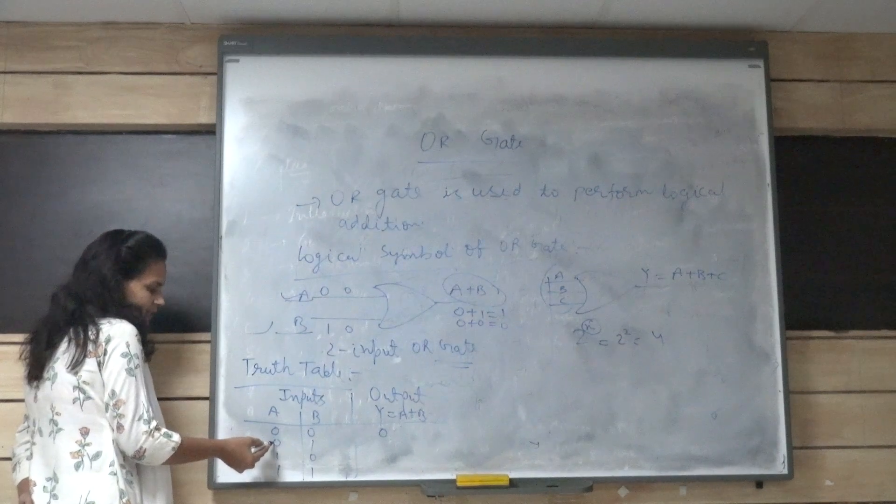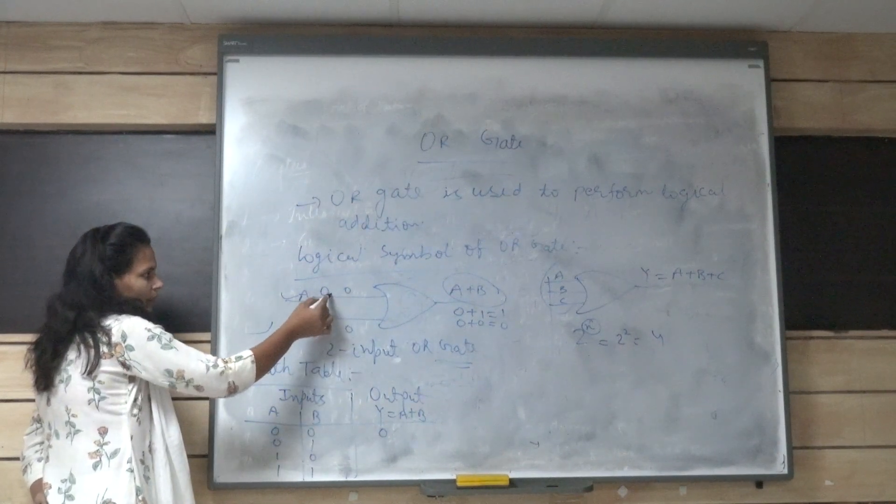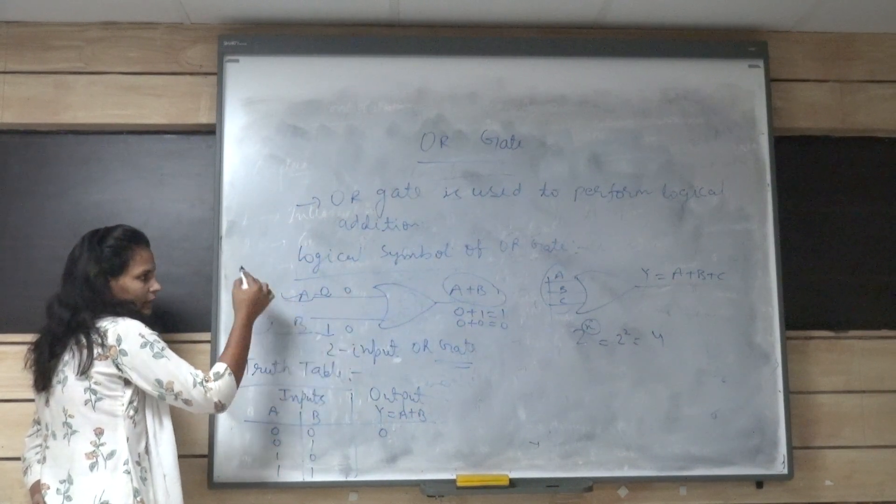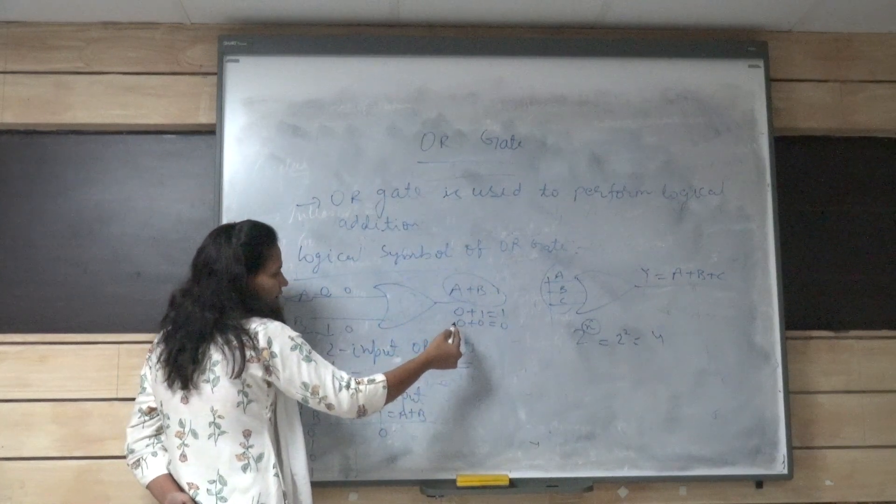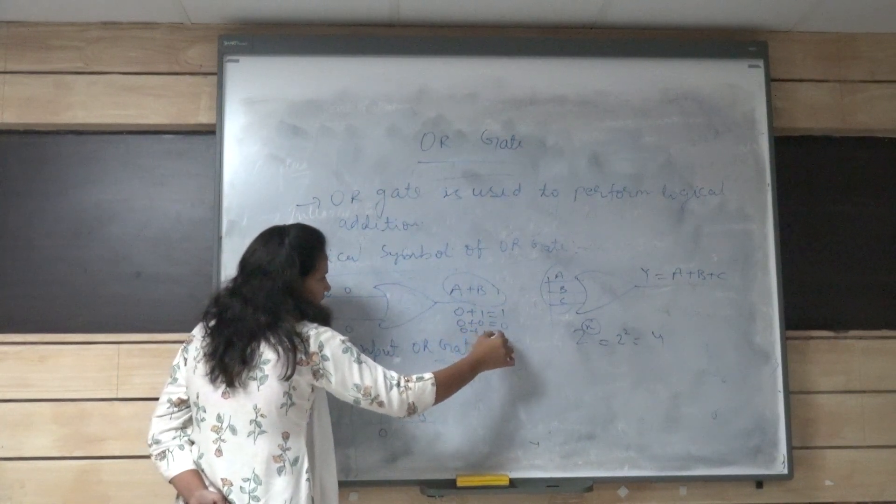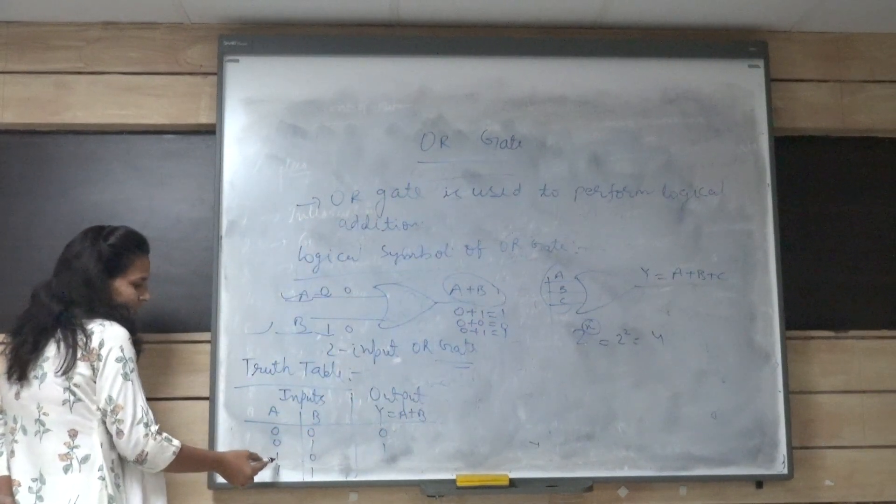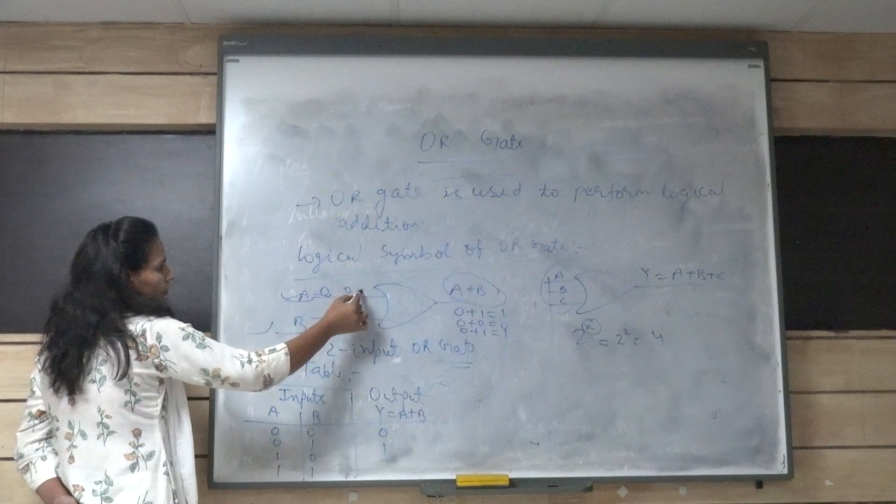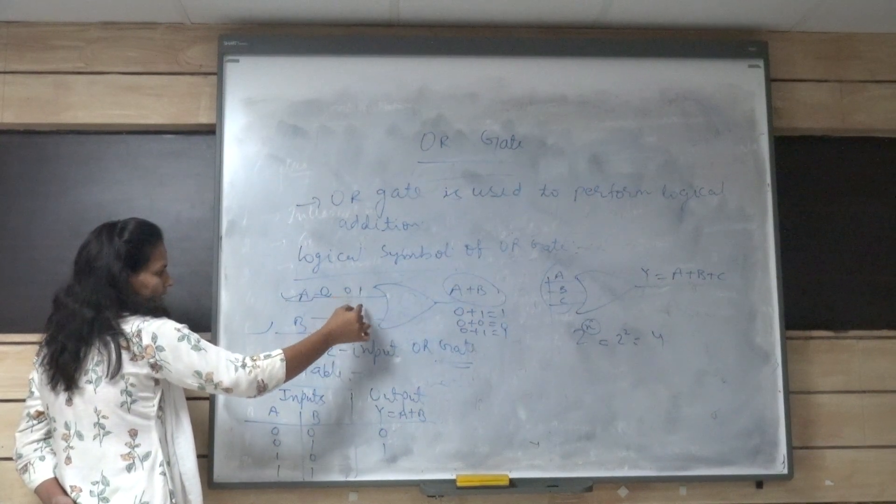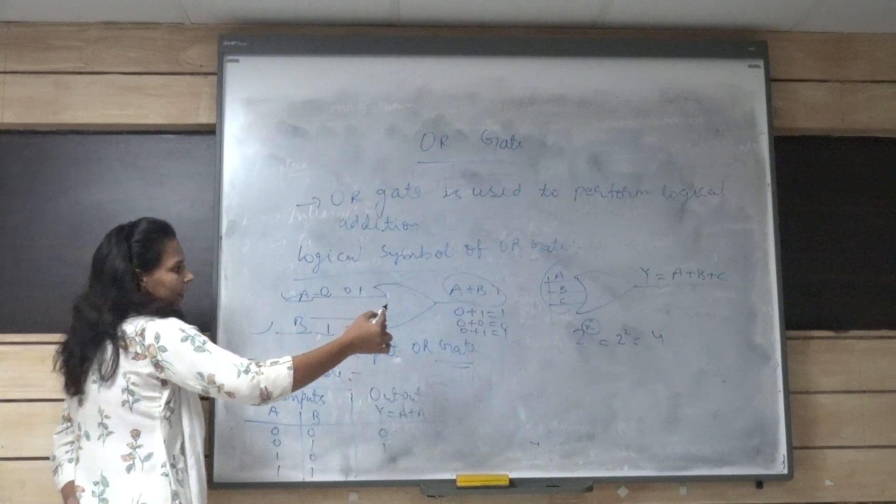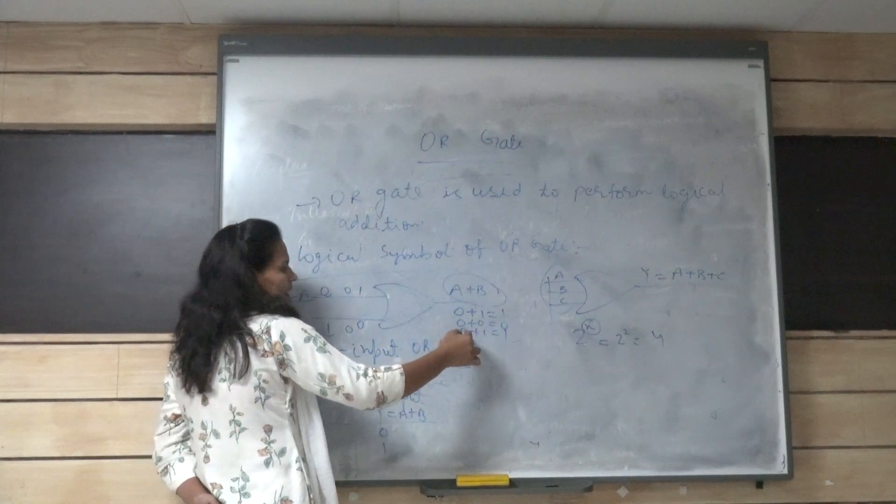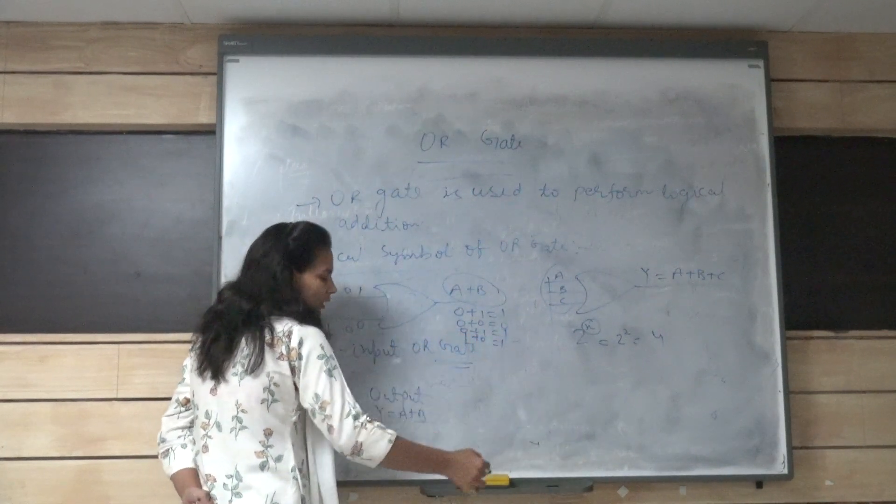In the next case, when A is 0 and B is 1, then the output of OR gate will be 0 plus 1 equals to 1. In the third case, when A is 1 and B is 0, then the output of OR gate will be 1 plus 0. So it will be 1.